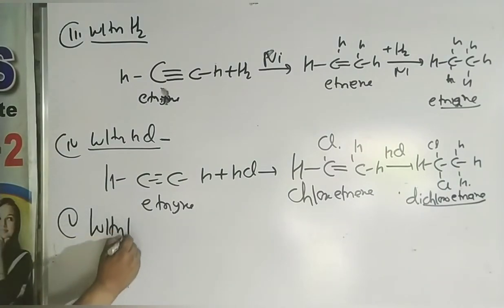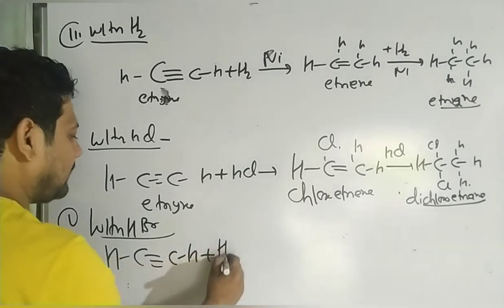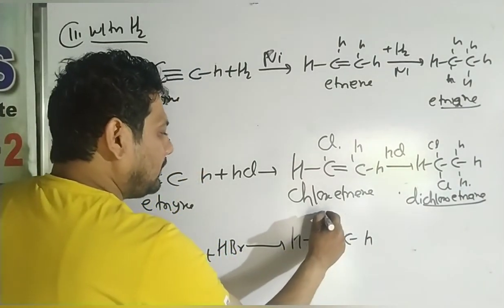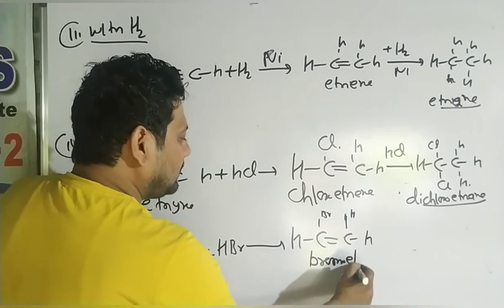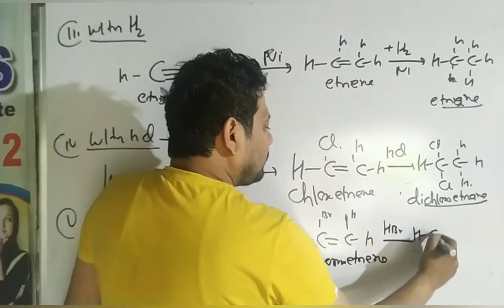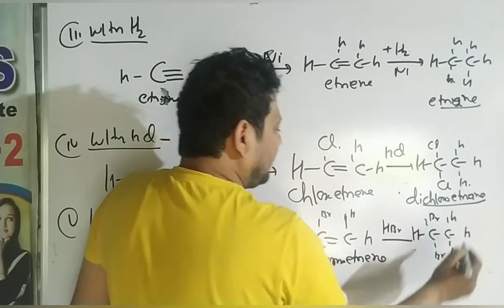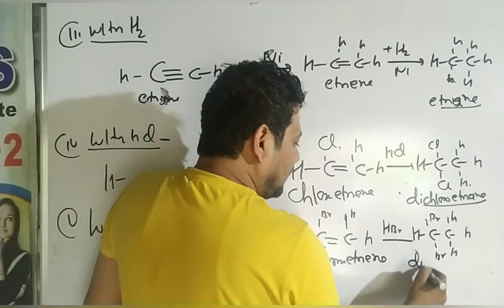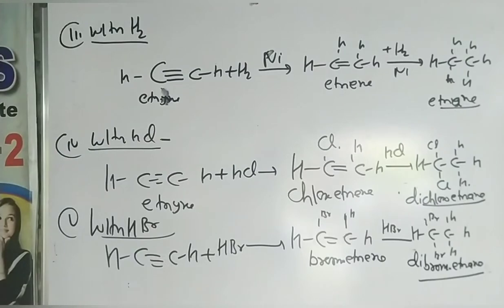With HBr: H-C≡C-H plus HBr — the triple bond becomes a double bond with BR and H added. This gives bromoethene. Adding another HBr gives the single bond product dibromoethane. This is the addition reaction — very important, note it down.